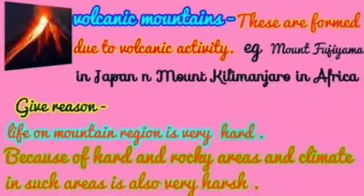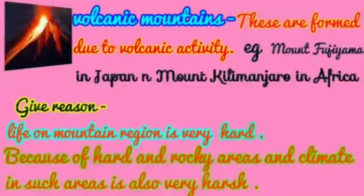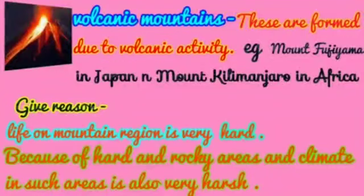To recap, we have revised three types of mountains: fold mountains, block mountains, and volcanic mountains. Fold mountains are formed due to internal movements in the earth, when the earth's crust bends. Block mountains are created when large masses of land are broken and displaced vertically. Volcanic mountains are formed due to volcanic activity.